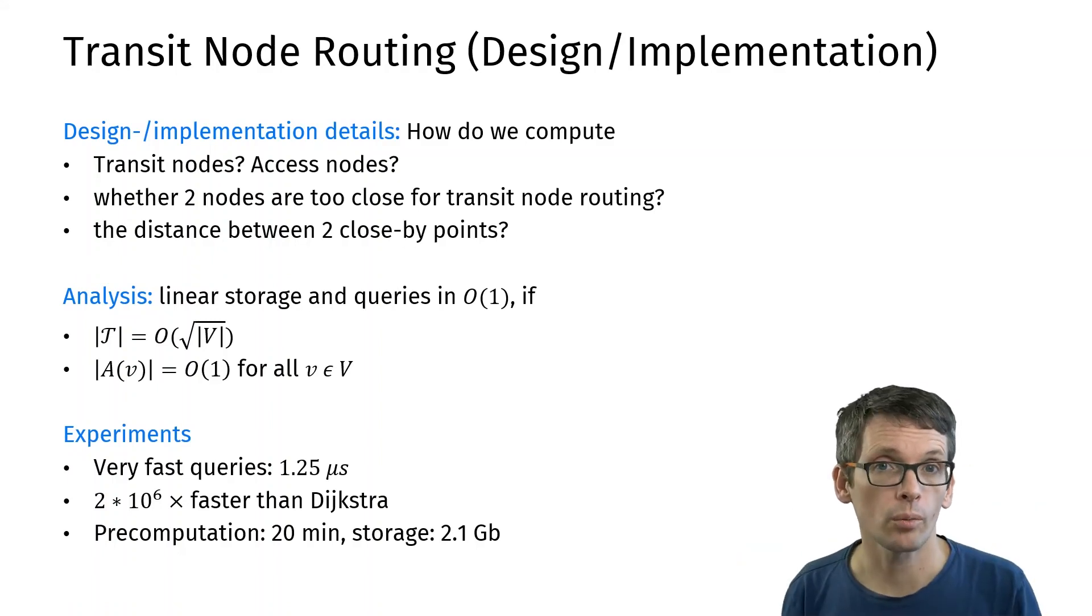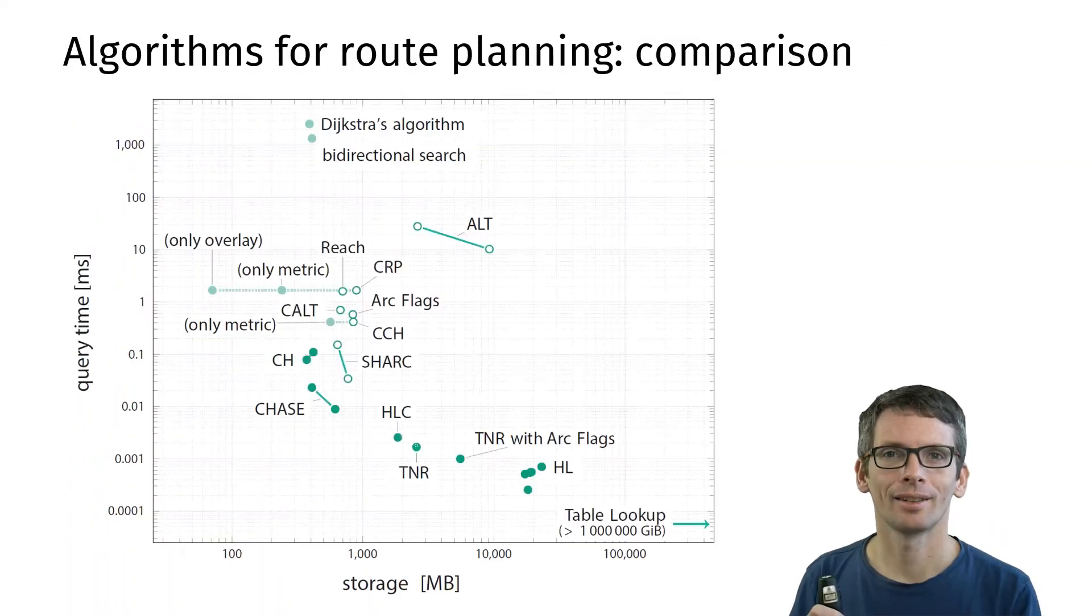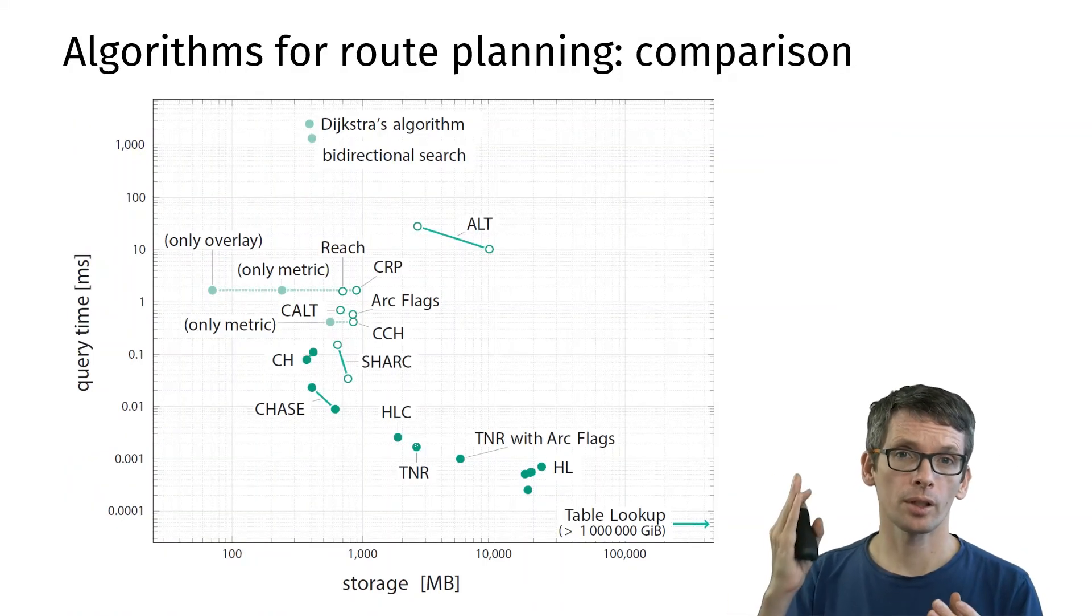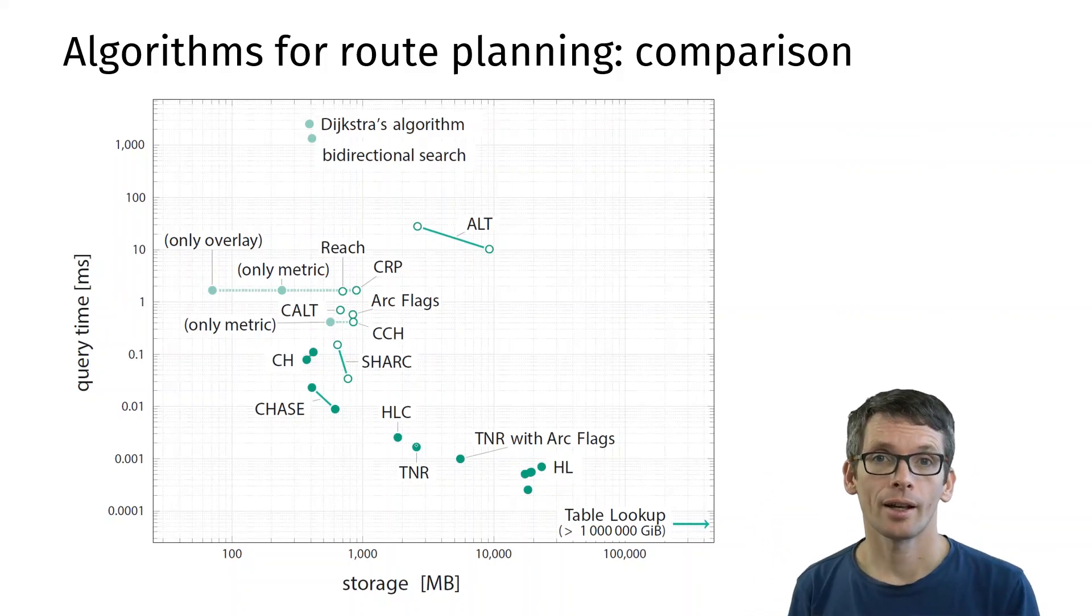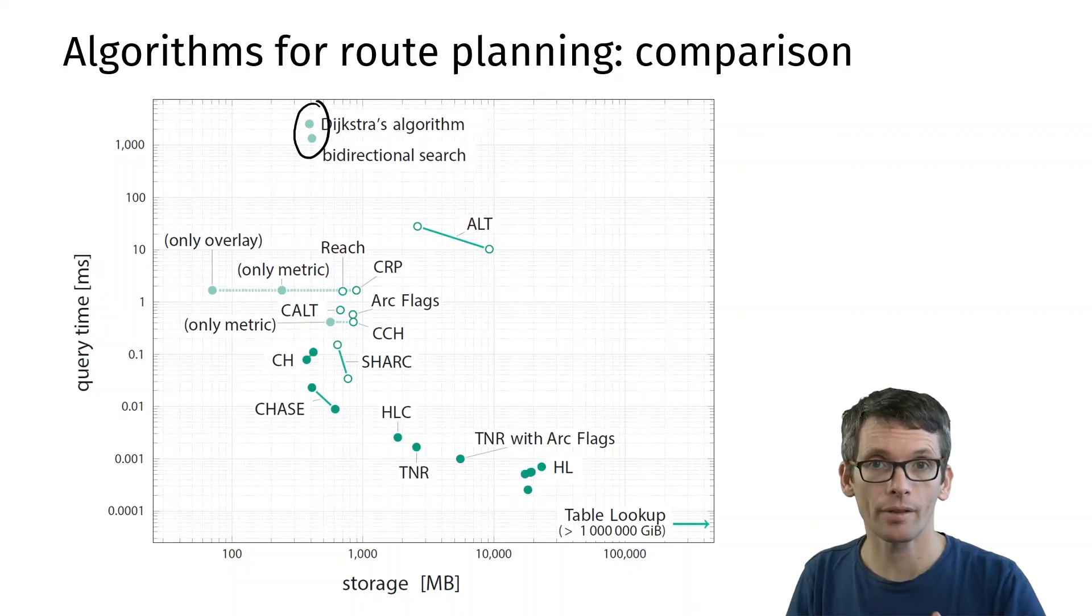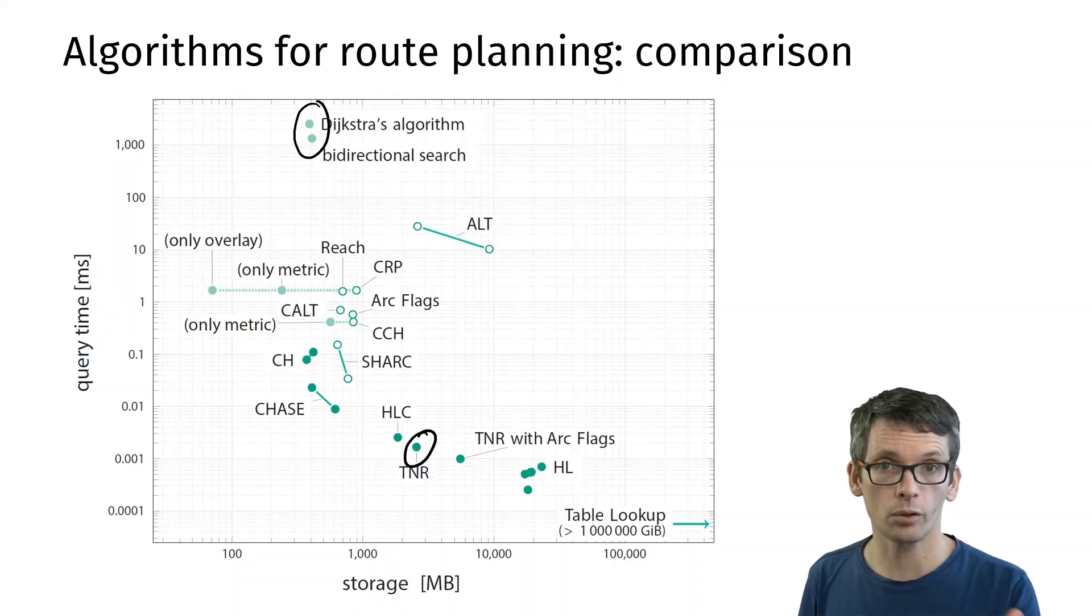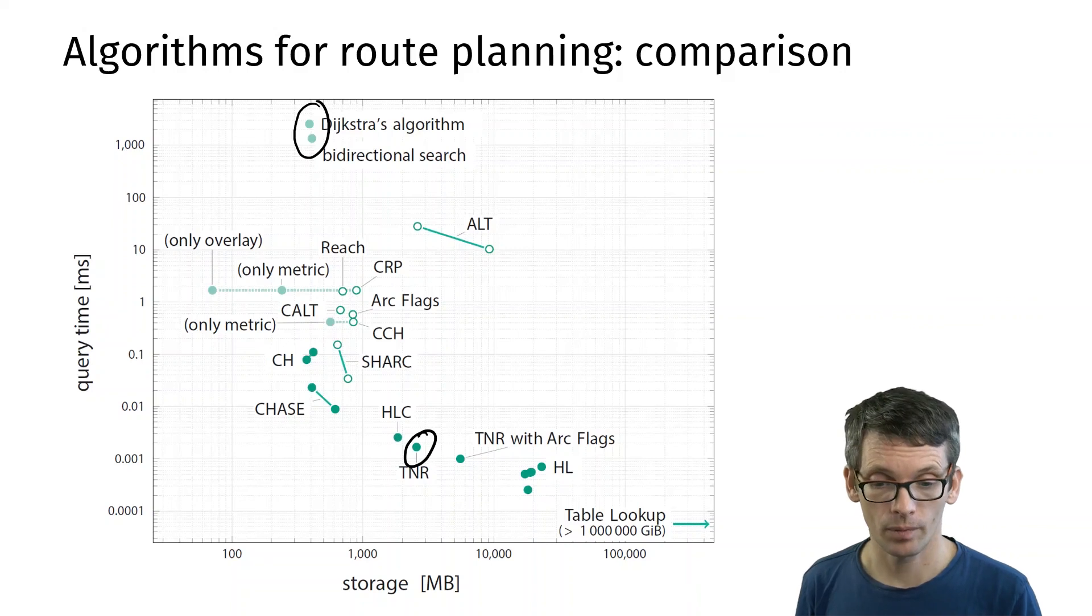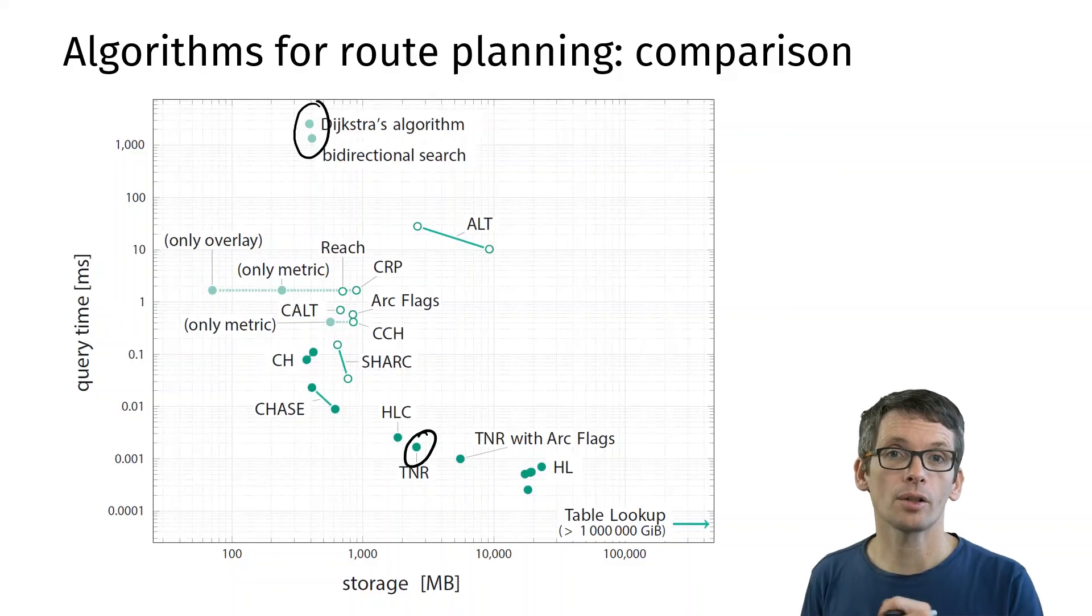There is much more to the world of route planning algorithms, so I really just scratched the surface. Here's some of the most important route planning algorithms with query time plotted against storage, and both axes use logarithmic scaling. You see right up here Dijkstra's algorithm, so Dijkstra's algorithm is very slow compared to other algorithms. Transit node routing sits down here, so that's one of the very fast algorithms. Also in terms of storage doesn't do that badly, so that's a really nice algorithm. But as you see there's much more to the world of route planning algorithms, and also still many interesting questions to solve.